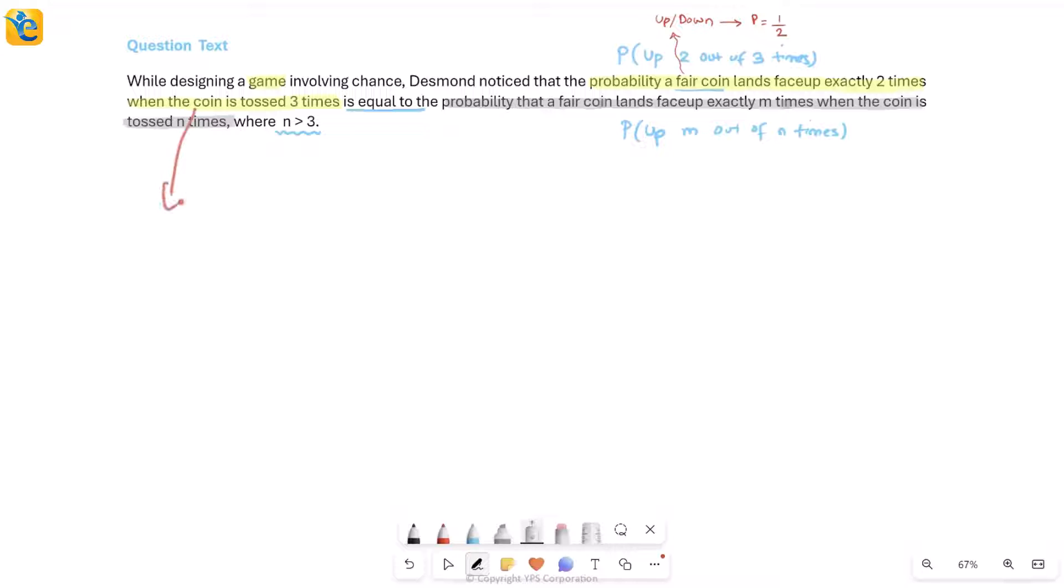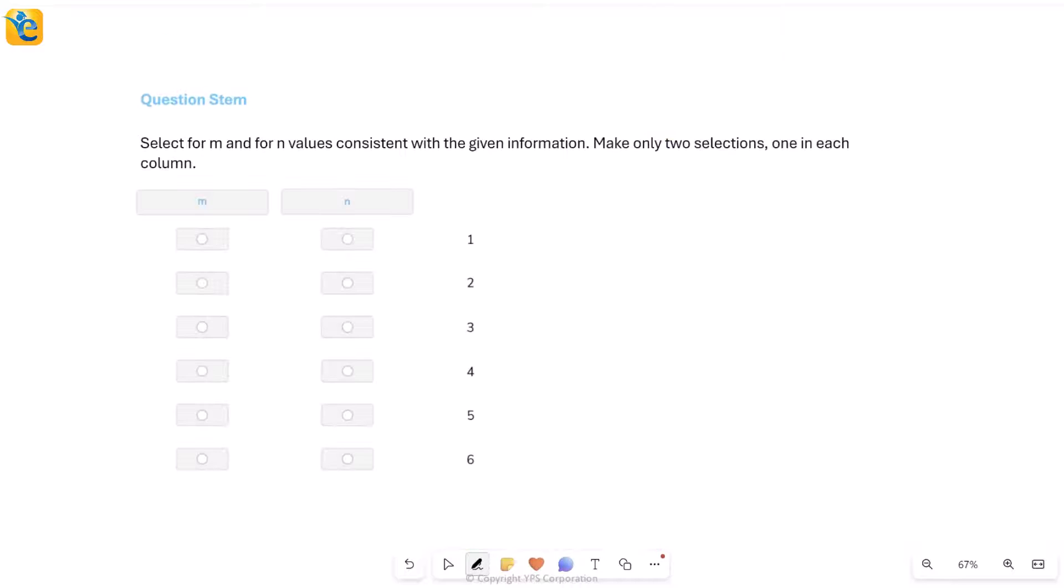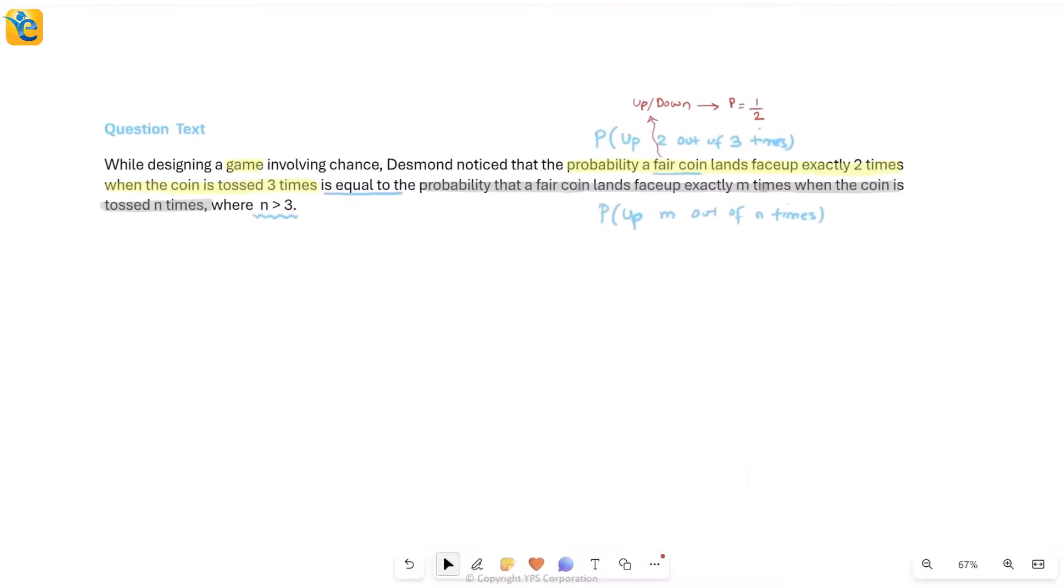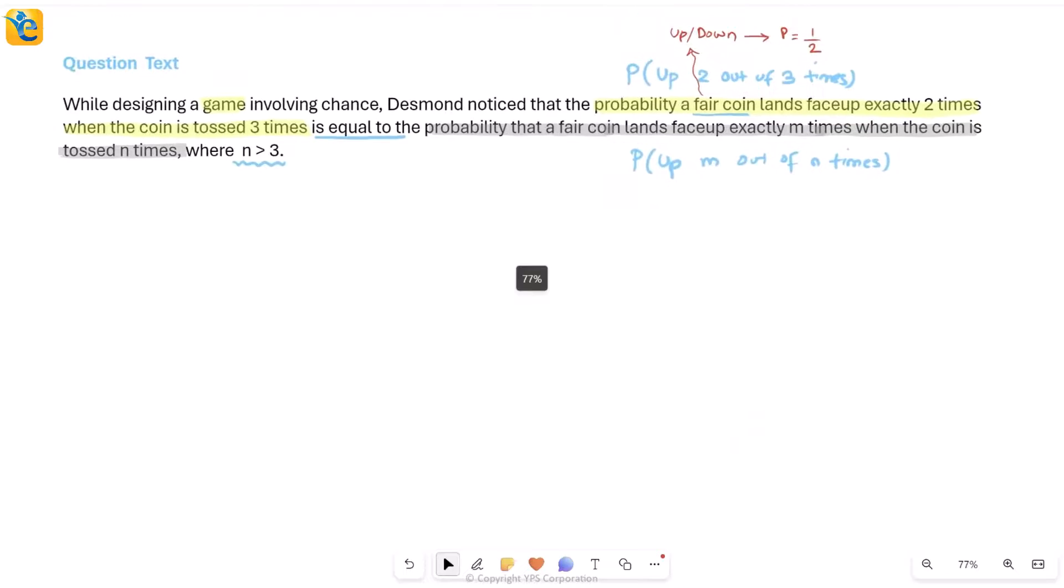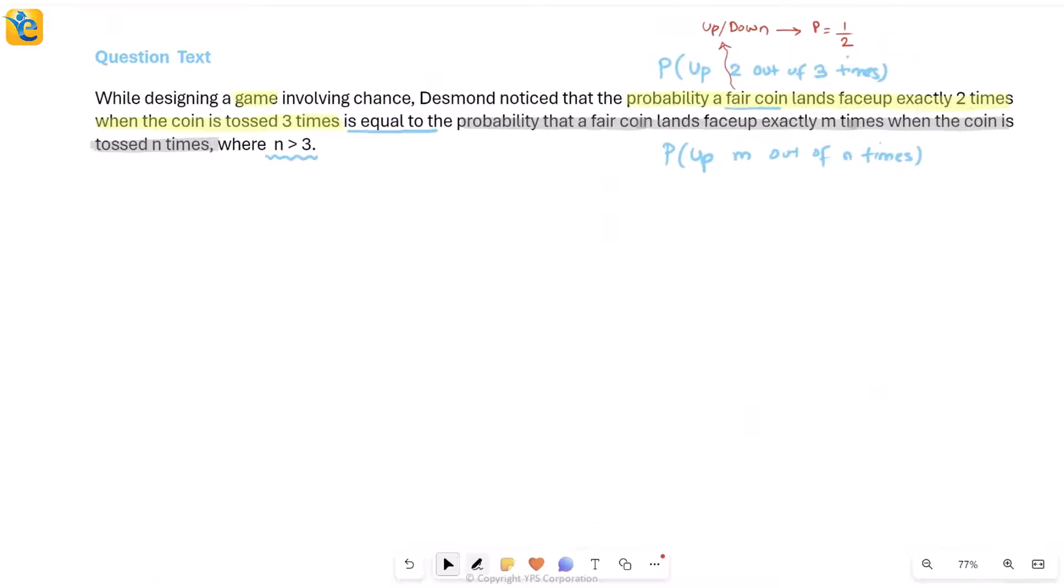We will write down our probability expressions, put them equal, and see what all we can find. But before going too deep into the work, we should give a glance at what the question is asking. It says select for m and for n the values consistent with the given information. This m and n is what we need to find. Now we really will work on the probability information and see what we can find.